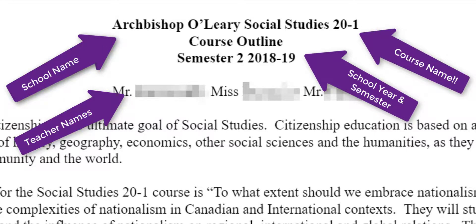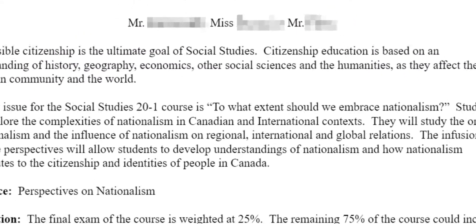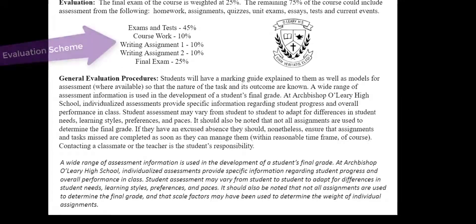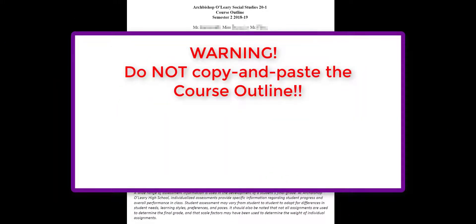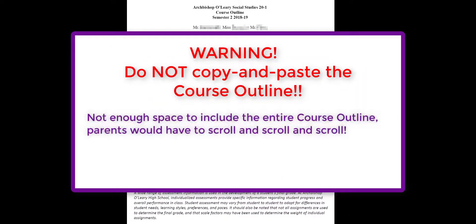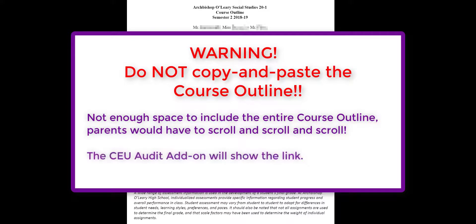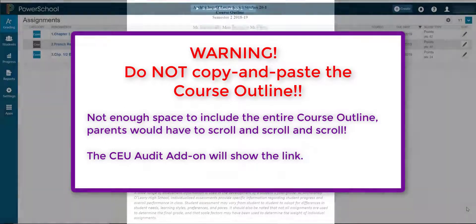One of the most frequently asked questions is: why can't I just copy and paste my whole course outline into the class description? Well, there are two reasons for this. First, the class description field can only fit so many characters, so most course outlines are simply too long to include here. Second, there is a CEU audit program in PowerSchool that will be used in the event of an audit, and a digital record of the course outline must be found there.